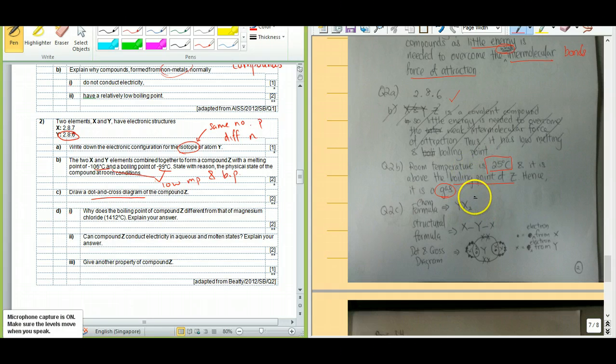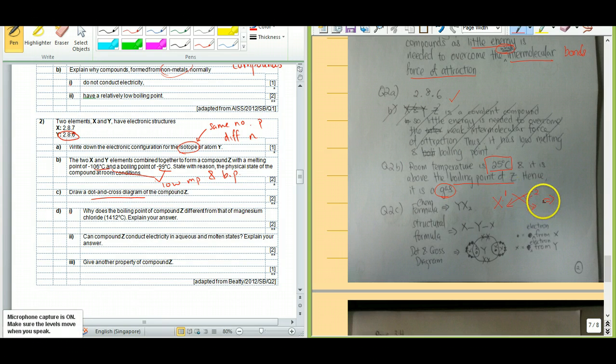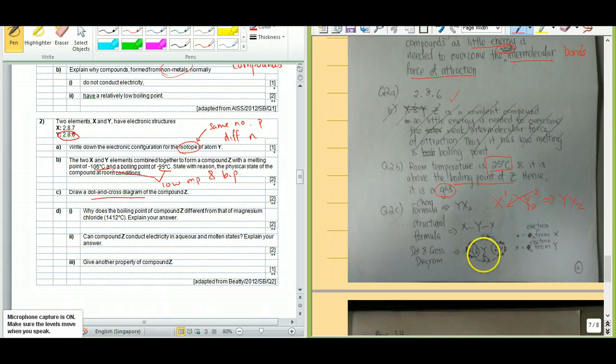Looking at the elements here, I know that X and Y, X is in group 7, so special number 1. Y is in group 6, so special number 2. So if you do your criss-cross, what you're going to have is YX2. So with that in mind, you can draw the chemical formula from the structural formula and then leading up to your dot and cross diagram. With the special number, you know how many bonds they have.